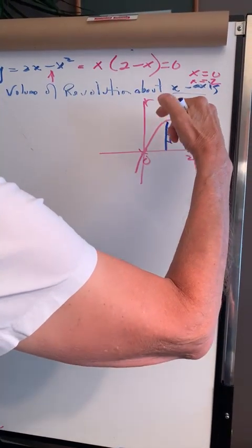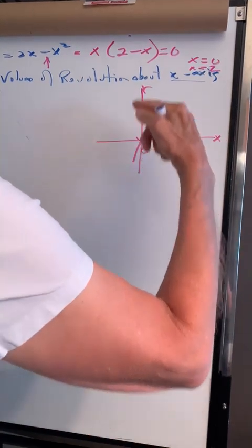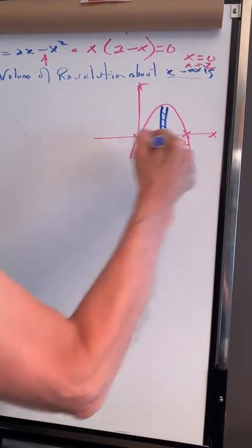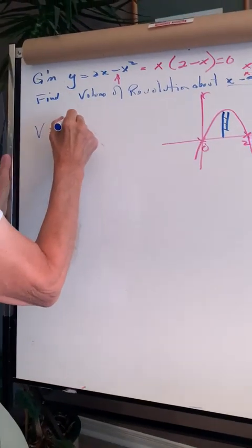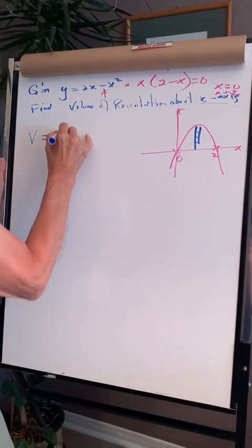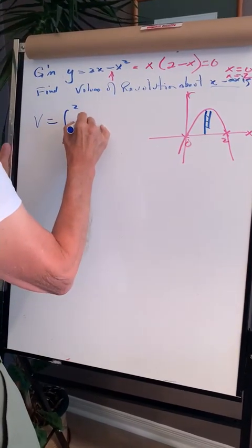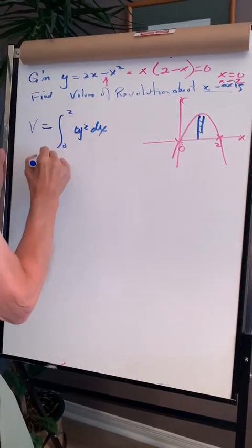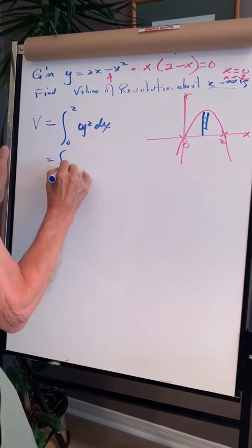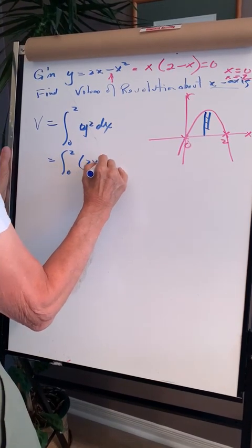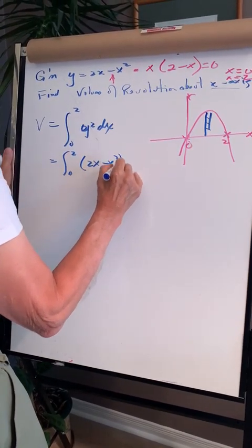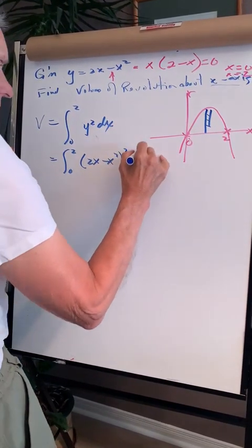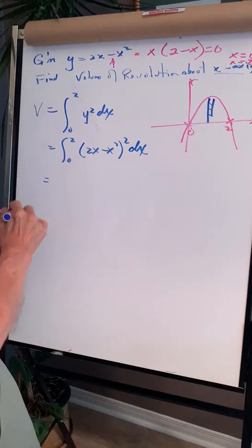The area will be pi r squared. R is y, so it'll be pi y squared. We're going to rotate it from 0 to 2, so the volume will be the integral from 0 to 2 of y squared dx. That is the integral from 0 to 2 of (2x minus x squared) squared dx.